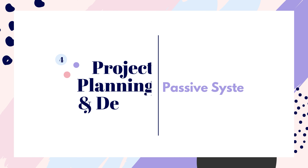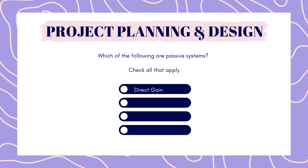Our question for project planning is: which of the following are passive systems? Check all that apply. Direct gain, Trombe wall, solar water heating, or roof pond.